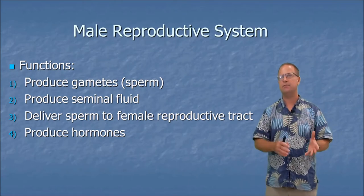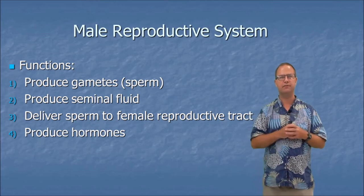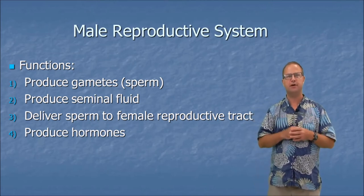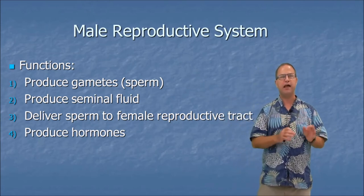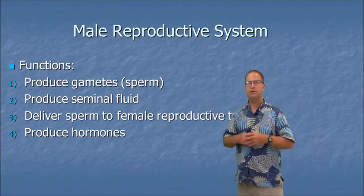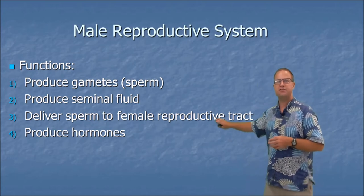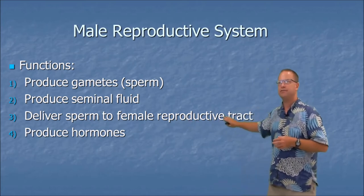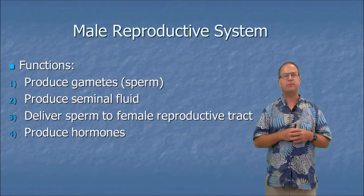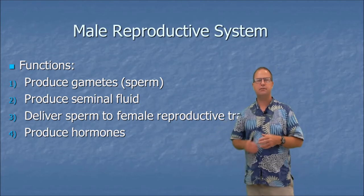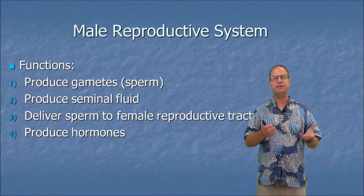Now that we've talked about anisogamy and its effects on female mate choice, let's go back to the anatomy and function of the male reproductive system. The male reproductive system has four major functions: first, produce gametes — the spermatozoa; second, produce seminal fluid to nurture sperm as they travel through the female reproductive tract; third, deliver the sperm through intermission and ejaculation; and fourth, make hormones — chiefly testosterone, which stimulates spermatogenesis and male secondary sex characteristics.